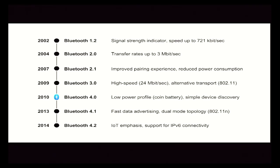This is where we all start getting Bluetooth headsets and Bluetooth connectivity for our phones. It continues to roll along from 2004 to 2007, picking up speed — from 721 kilobits per second to 3 megabits per second. At Bluetooth 3.0, it's 24 megabits per second. And then IoT — the Internet of Things — came along and just flipped that on its head, because at Bluetooth 4, it's really a low-power device designed to run on a coin cell battery, made for simple discovery.